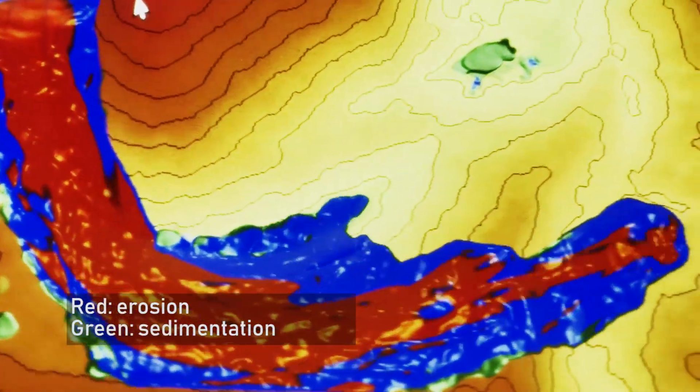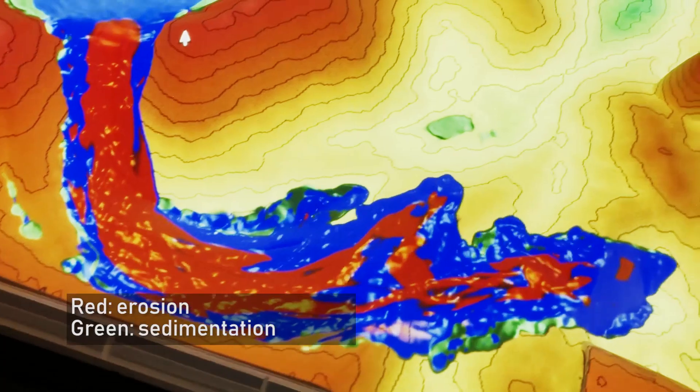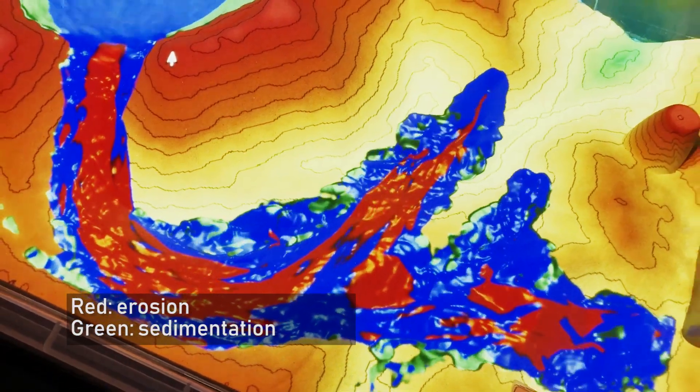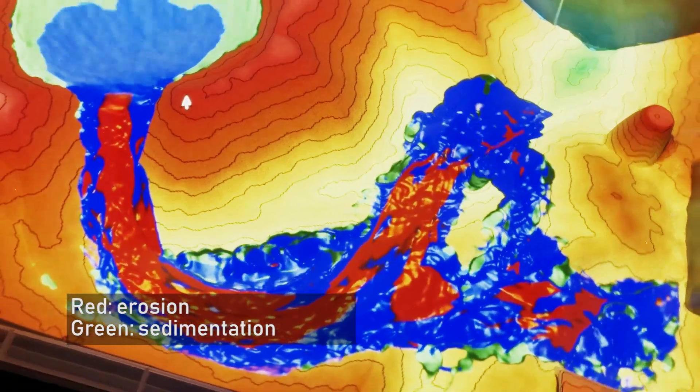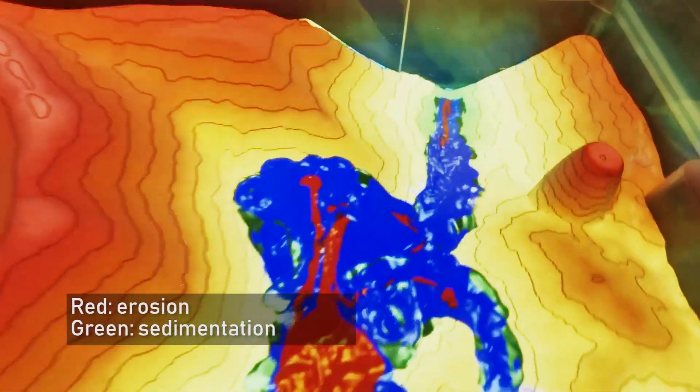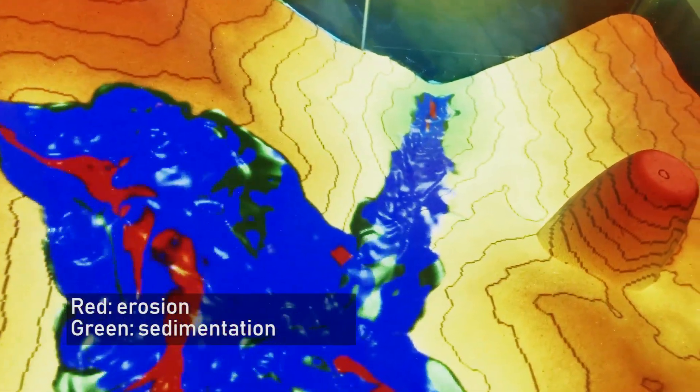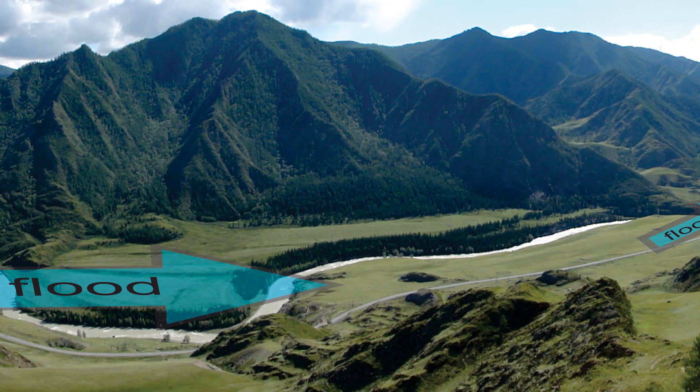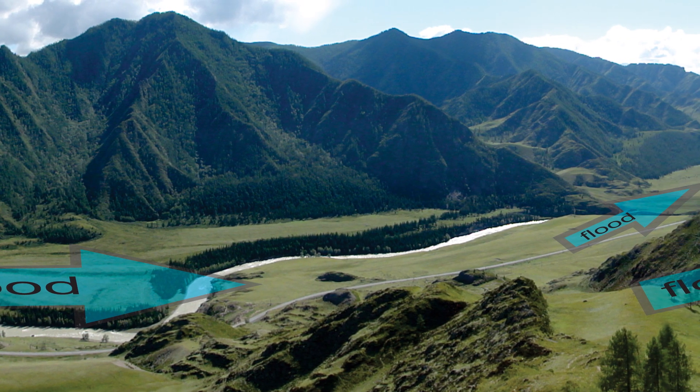Thanks to these improvements we can simulate in the sandbox phenomena that we observe in nature, such as run-up deposits during mega flooding. When large outburst floods encounter topographic obstacles, the water is forced to climb, losing kinetic energy and dropping sediment on top of the obstacle, as in this example from a late glacial outburst flood in the Altai mountains.